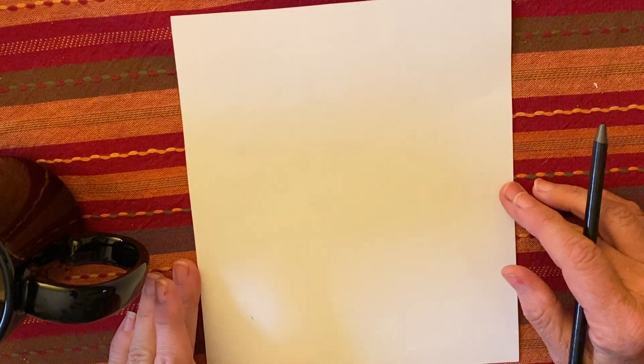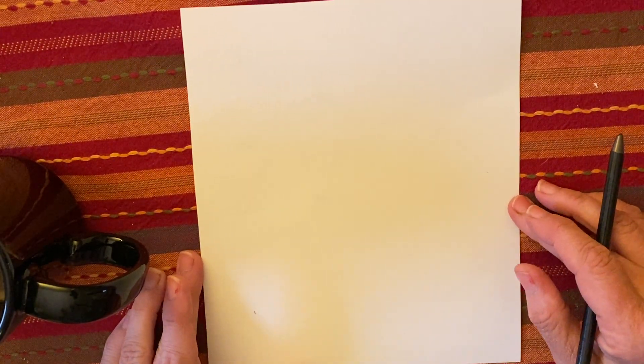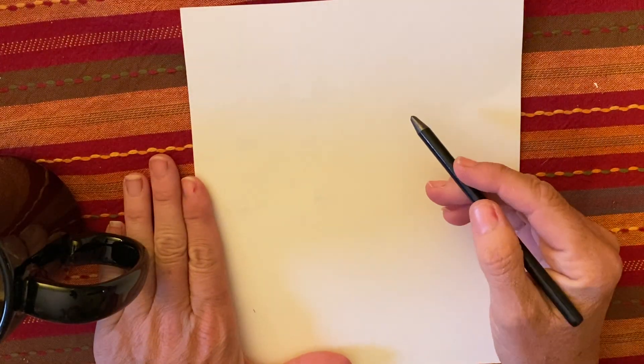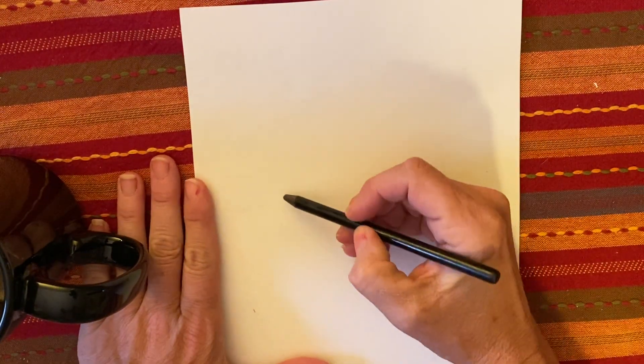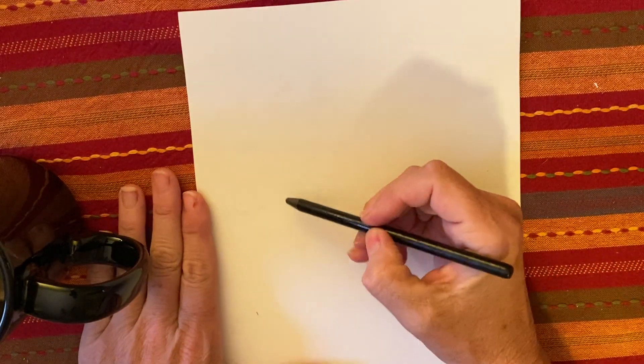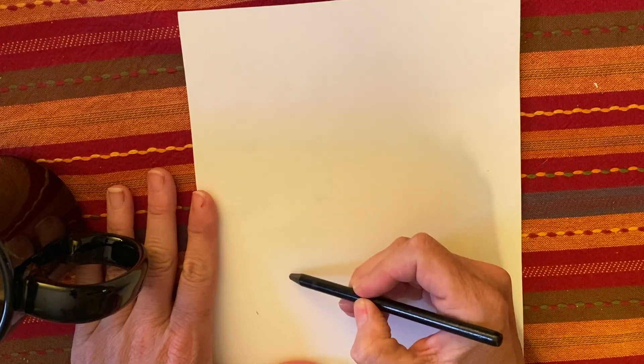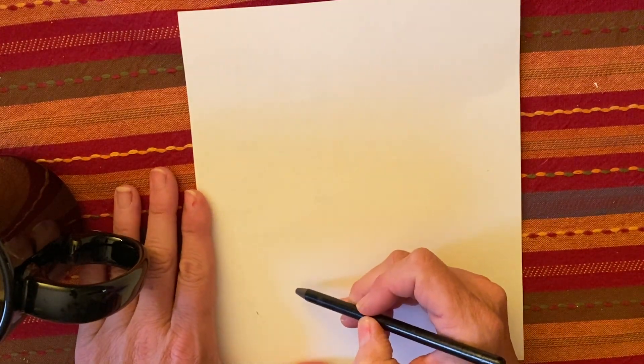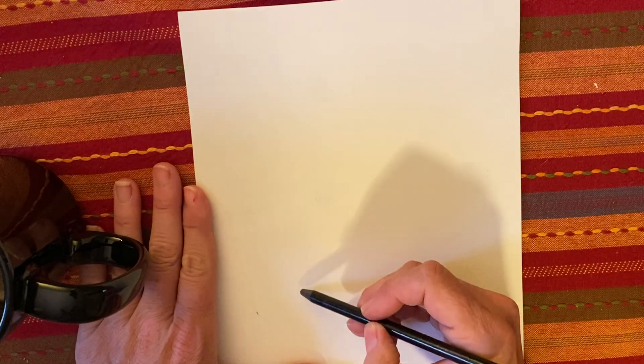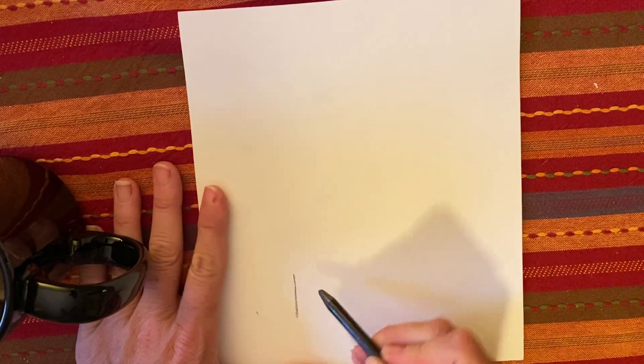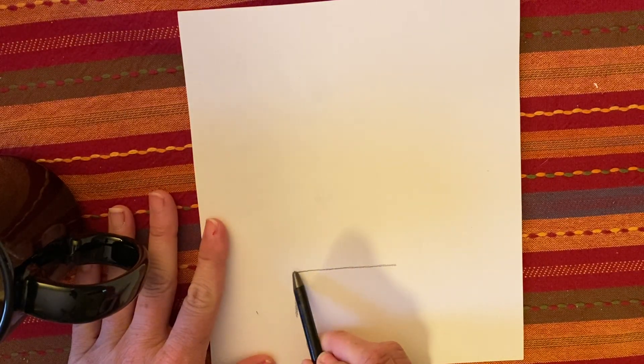I want to show you that 3D box first. Grab a pencil and you don't really need a ruler for this. If you want to you can use a straight edge of a book or something like that. In the lower part of your paper you're going to want to draw a rectangle.